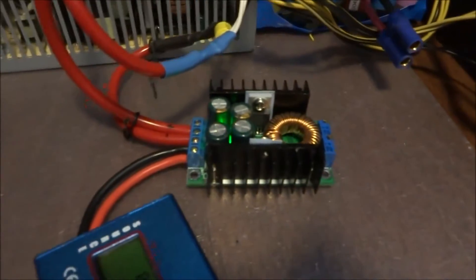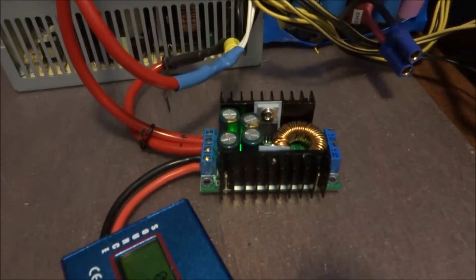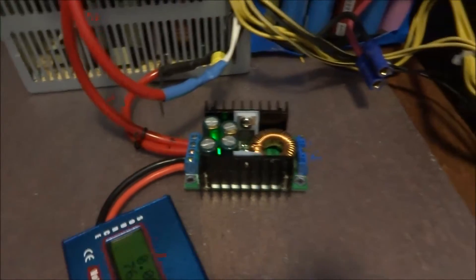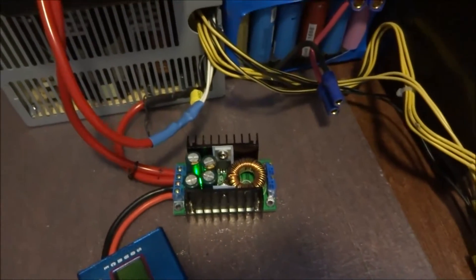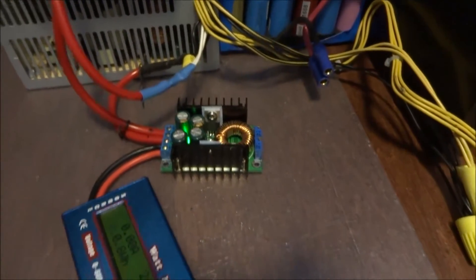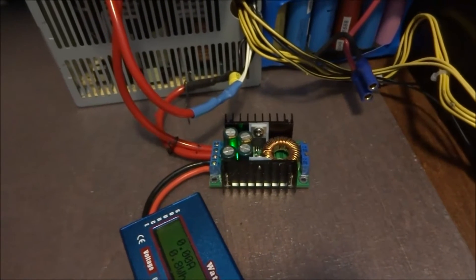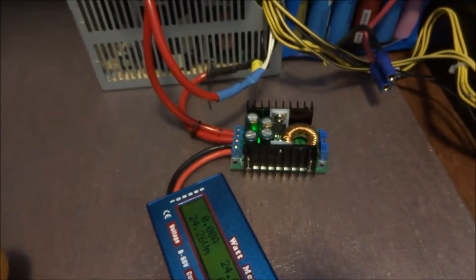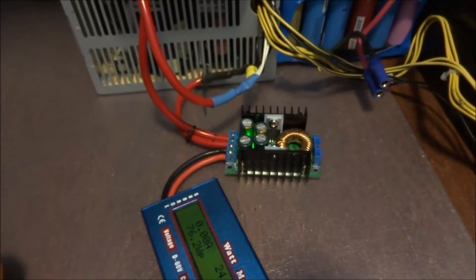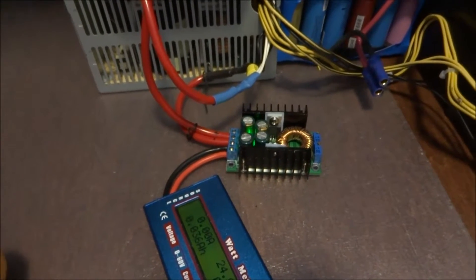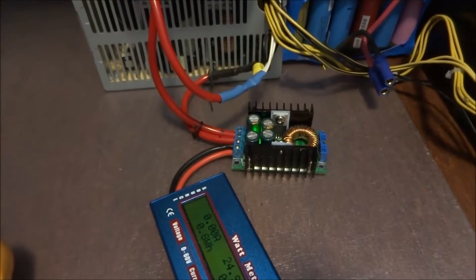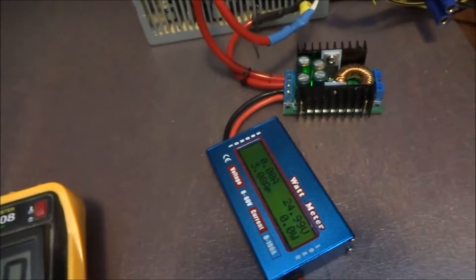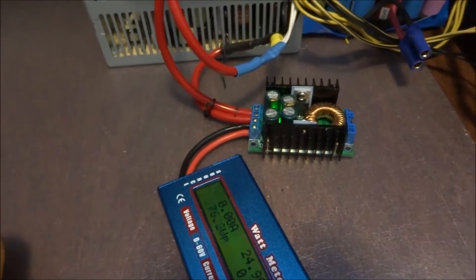Now how do I do this? Using one of these. This is a DC to DC converter which you can get on eBay for under four dollars US. They can do 7 to 32 volts in to 0.8 to 28 volts out, so that's perfect. Now I need to power that up.